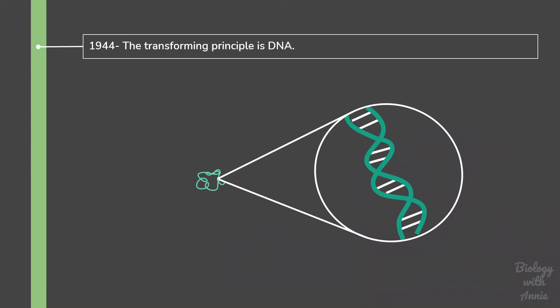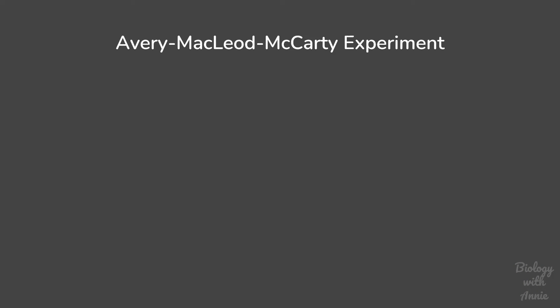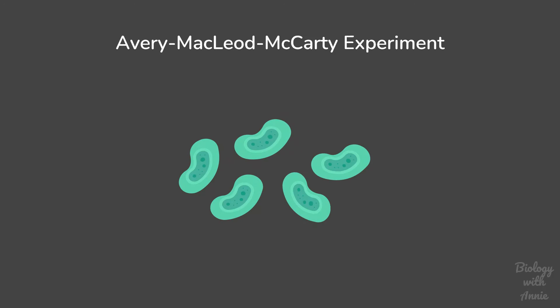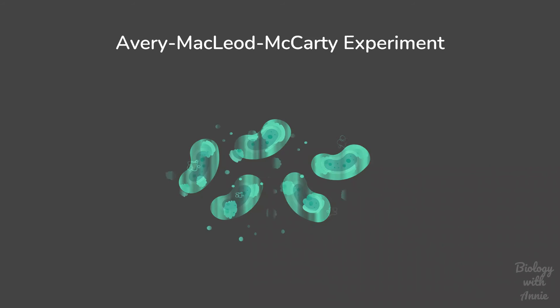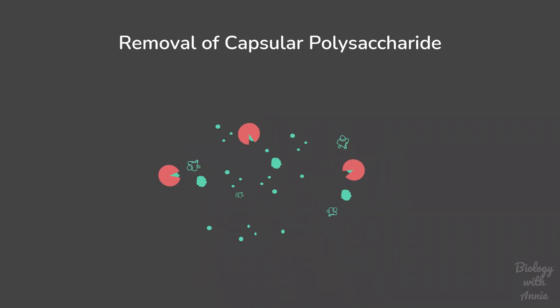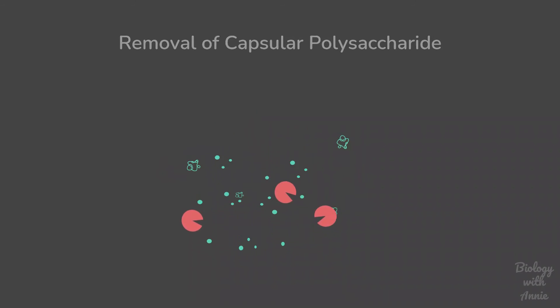So how did they arrive at this conclusion? Oswald Avery, Colin McLeod, and Macklin McCarthy were scientists working at Rockefeller University in New York. They tried to isolate and purify the transforming principle from the S-strain bacterial cells. To do this, they first killed the bacteria using heat and extracted the soluble components inside the S-strain. Next, they used an enzyme to degrade the polysaccharides that make up the capsule, and also removed all the proteins in the extract using chloroform.